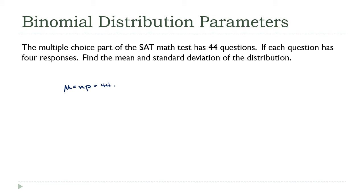So let's just apply our formulas. The mean is NP, that's 44 times the probability of success, which would be the probability of answering a question correctly. There's one correct question for every four, so the mean will be 11.